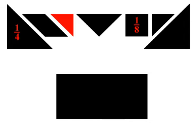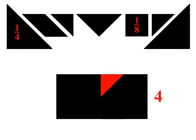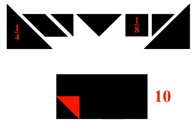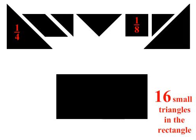Now let's look at the small triangle. Counting how many small triangles cover the rectangle: 1, 2, 3, 4, 5, 6, 7, 8, 9, 10, 11, 12, 13, 14, 15, 16. There are 16 small triangles in this rectangle, so the small triangle is 1 sixteenth the rectangle.